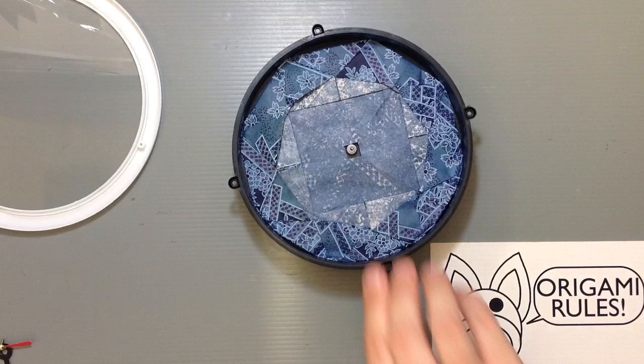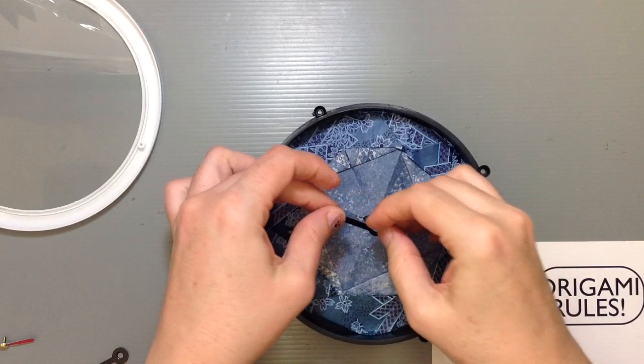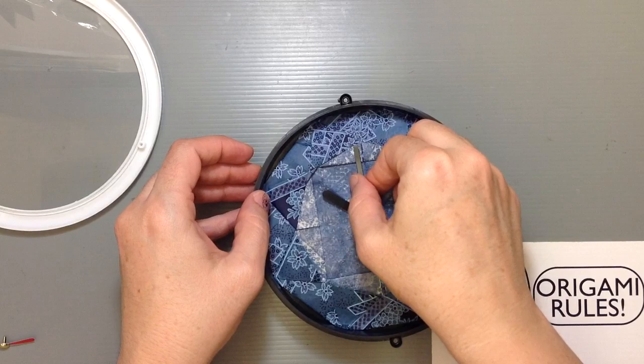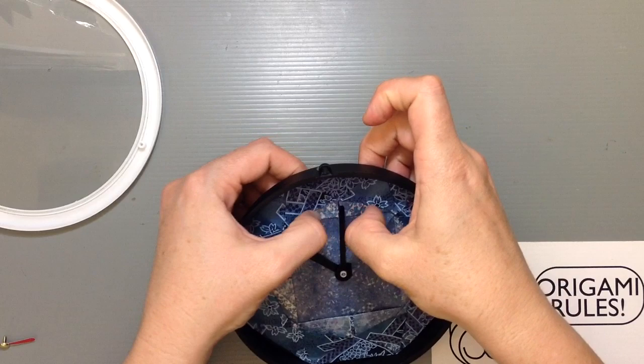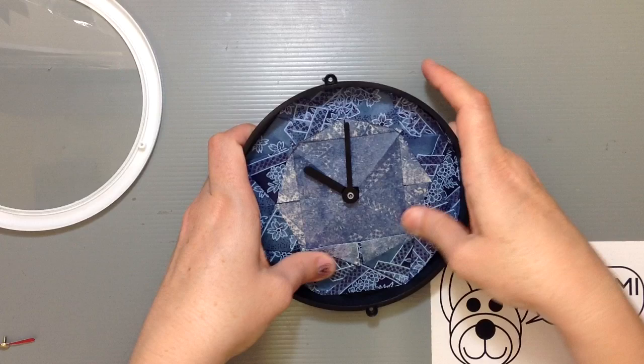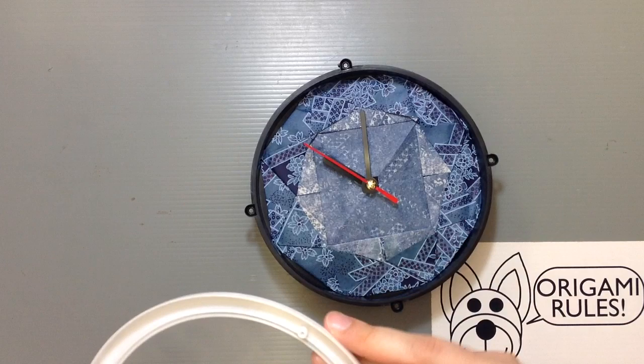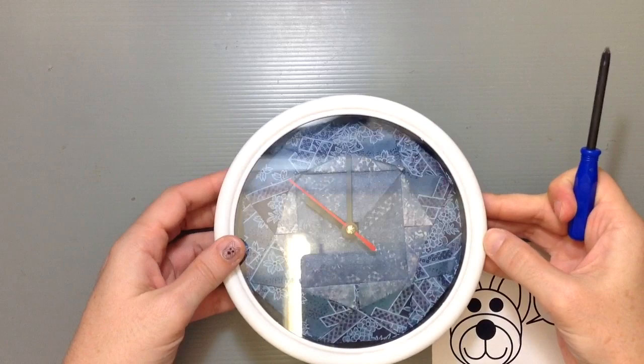Once you've got everything in there, then you want to make sure you know where the top of things are. I'll put this hour hand here and the minute hand and the second hand. Then you just put the pieces back together again with the lid part. That gives you the finished piece. You can see how cool that looks with the paper in there.